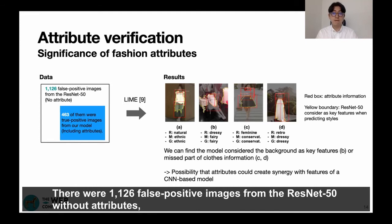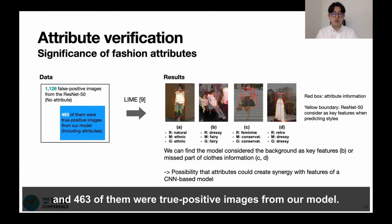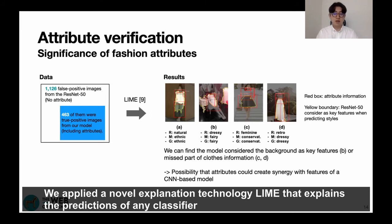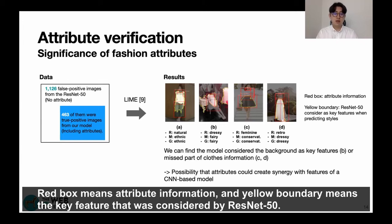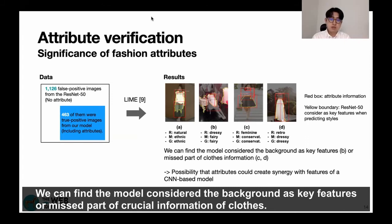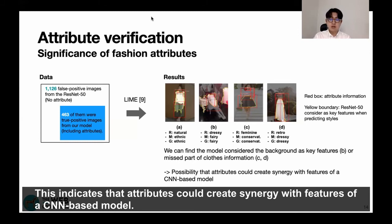We further investigated the significance of attributes through visualization. There were 1,126 true positive images from ResNet-50 without attributes, and 463 of them were true positive images from our model. We applied a novel explanation technology to the classification process of ResNet-50 for those 463 images. The yellow boundary shows the key feature considered by ResNet-50, and we found the model sometimes considered the background as the key feature or missed crucial information about clothes. This indicates that attributes could create synergy with the features of a CNN-based model.